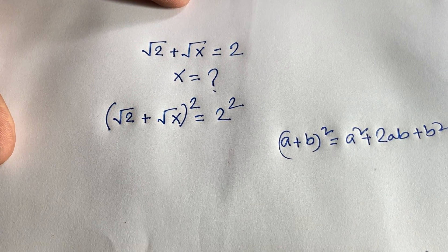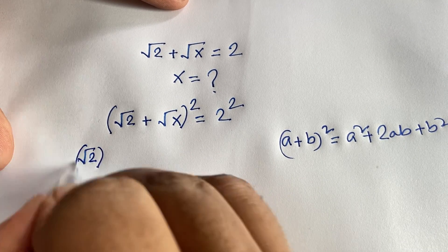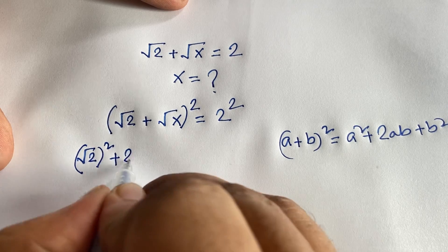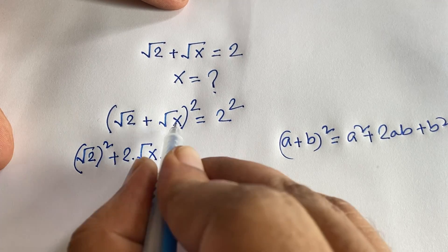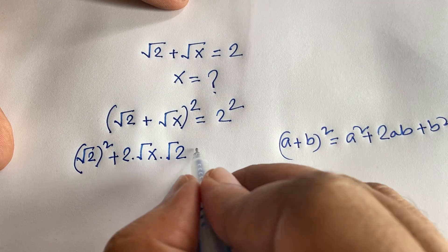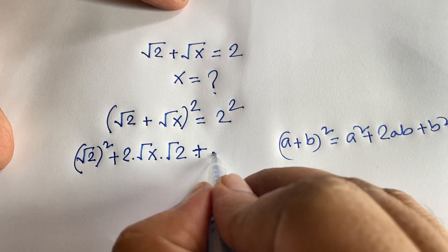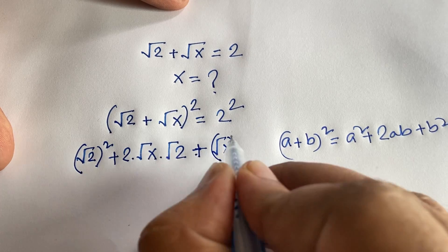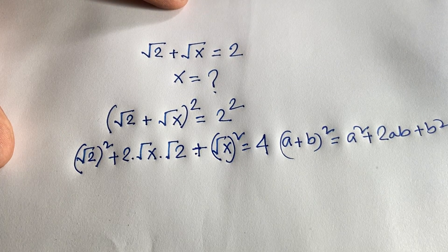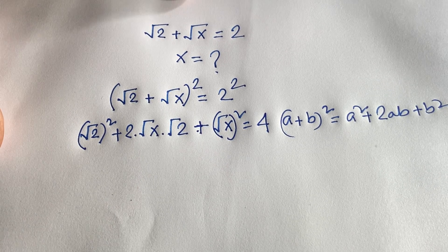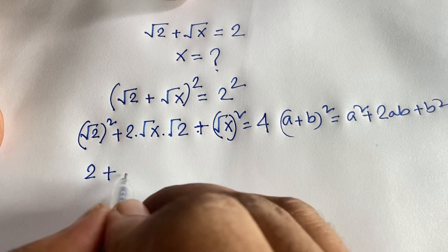According to this identity, it will be square root 2 whole square, plus 2 times square root 2 times square root x, plus square root x whole square, is equal to 4 — since 2 squared equals 4. The squares cancel, giving us 2 plus 2√(2x) plus x equals 4.